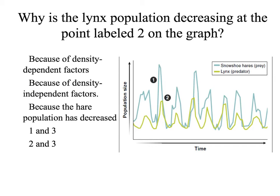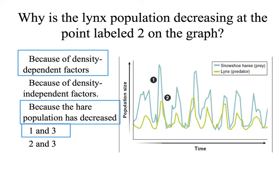Here's a practice problem: why is the lynx population decreasing at the point labeled number 2 on this graph? The correct answer is number 4 — both options 1 and 3 are correct. Food supply is a density-dependent factor, and for these lynx, hares are their food. Because the hare population has decreased, the lynx are running out of food, which limits their population and causes them to decrease as well.